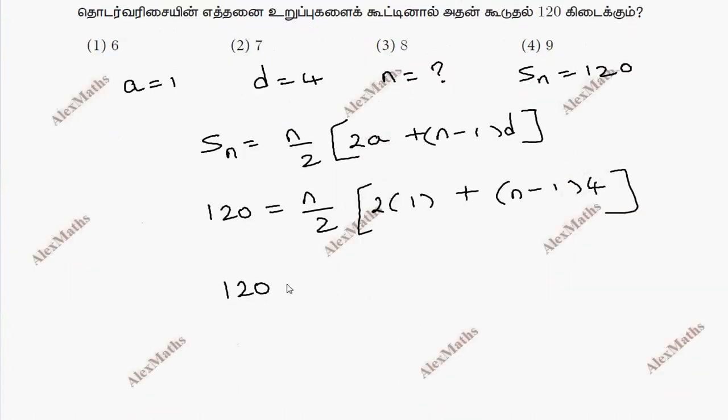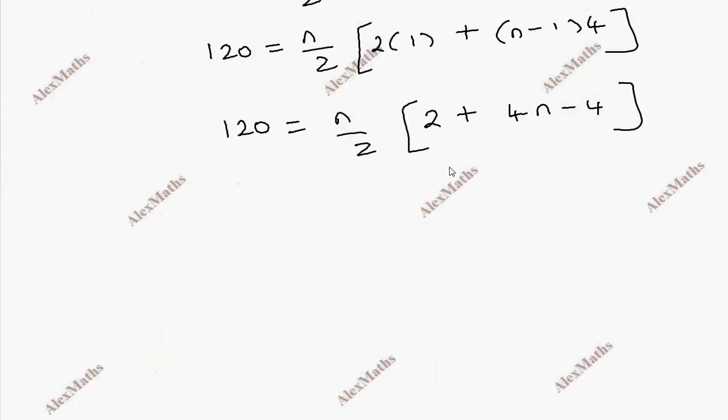120 equals n by 2. 2 plus 4n minus 4 gives us 4n minus 2.